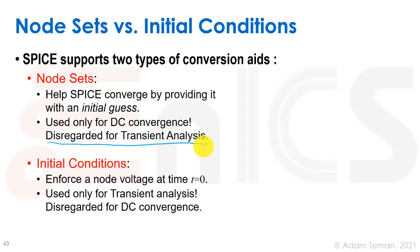The other convergence aid is called initial conditions, used for transient analysis and disregarded for DC convergence. An initial condition tells a capacitor its initial voltage, or an inductor its initial current. Every capacitor has the option to add an initial voltage; every inductor has the option to add an initial current. You can also put an initial condition on a node. This enforces that voltage at t = 0; after t = 0, the circuit evolves according to its normal conditions.